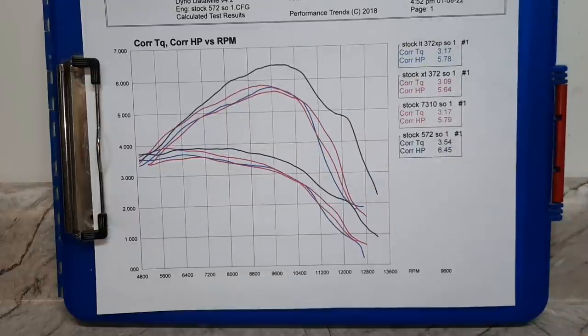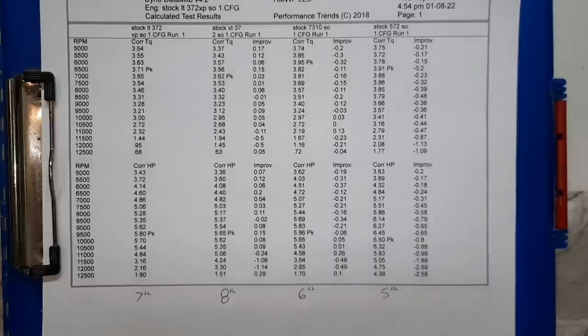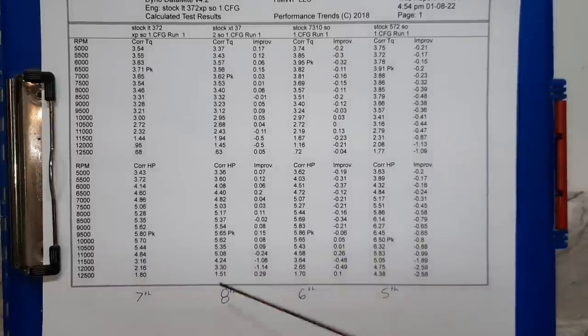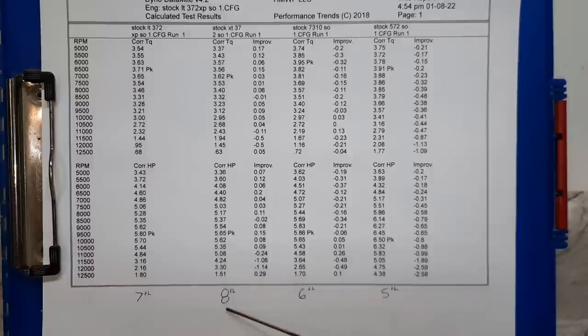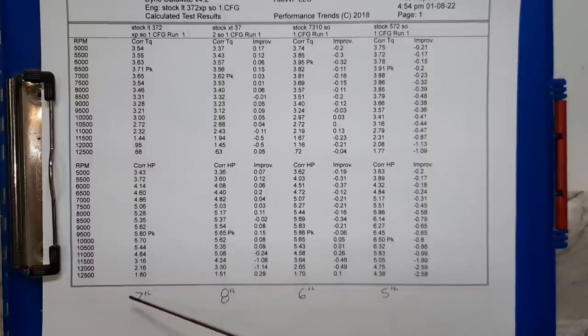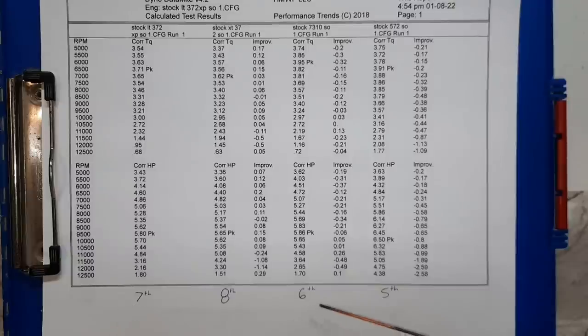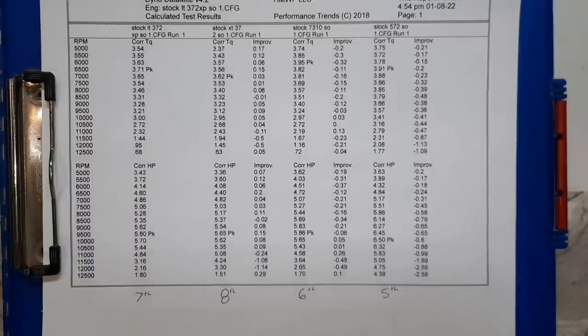The 572 runs away from these three, but it just didn't have quite enough to catch the top four. Here's the report results. Lowest power, eighth place, the X-torque 372. Then the low top OE 372. Then the 7310. Then the 572.